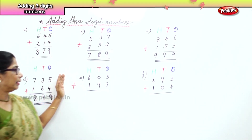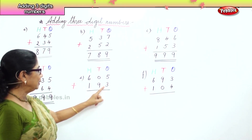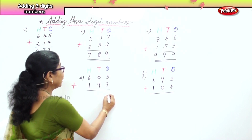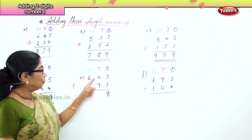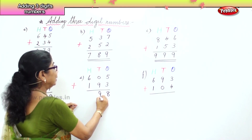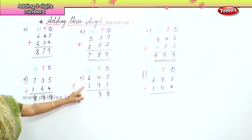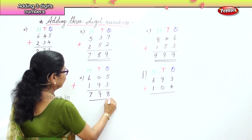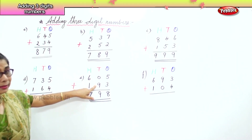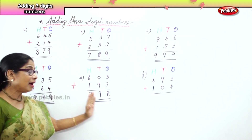Let's do another sum: six hundred and five plus one hundred and ninety-three. In the ones place we have five ones and three ones. What is five plus three? Eight ones. In the tens place, you have zero tens and nine tens — nine tens plus zero tens is nine tens. Six hundred and one hundred: six plus one is seven hundred. Five ones and three ones is eight ones, zero tens and nine tens is nine tens, six hundred and one hundred is seven hundred. Your answer is 798.